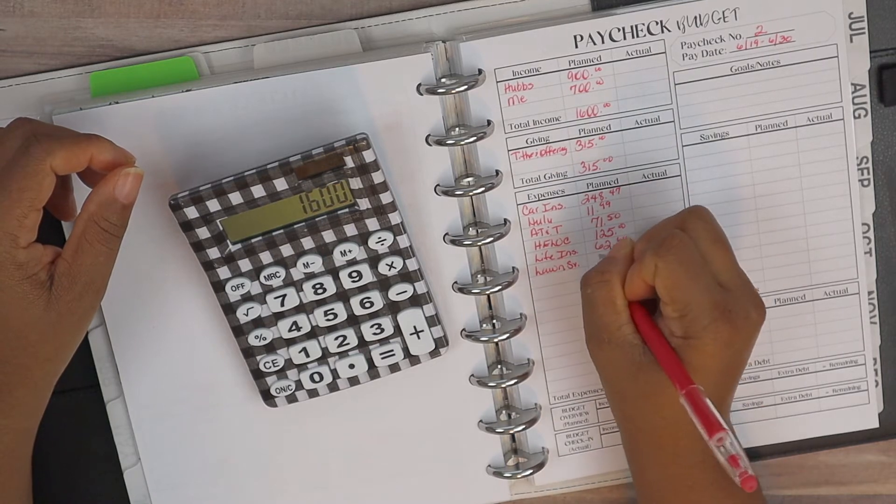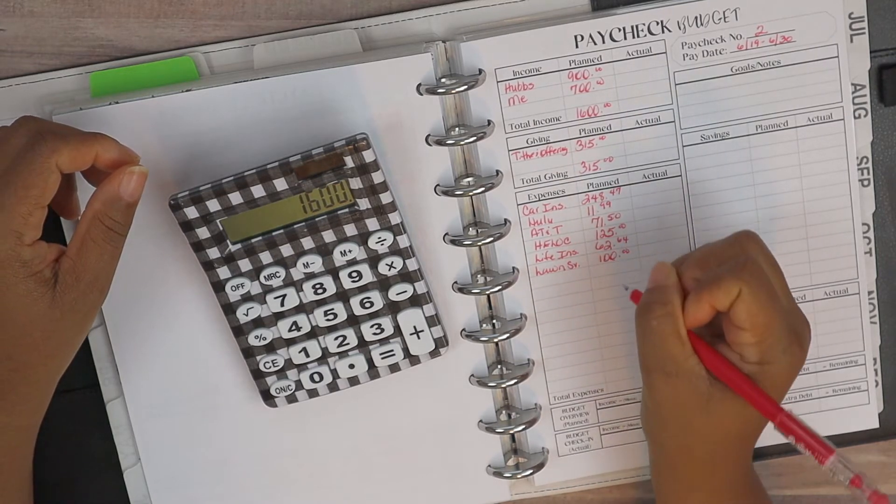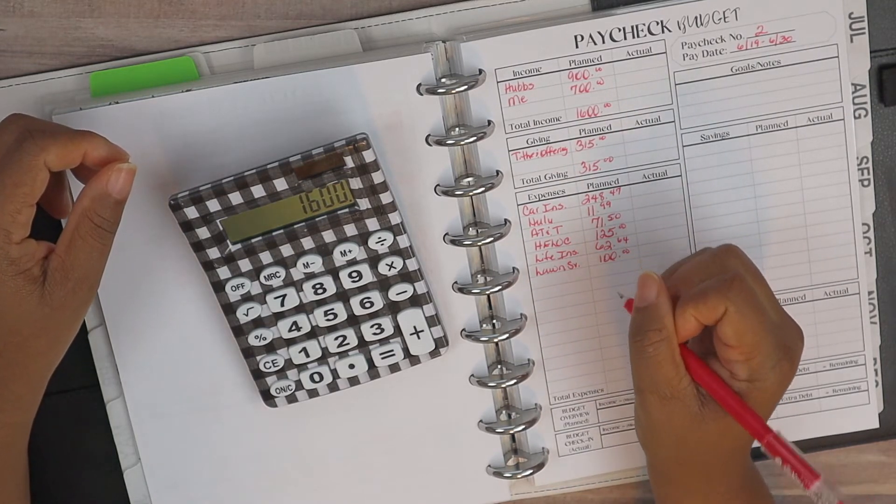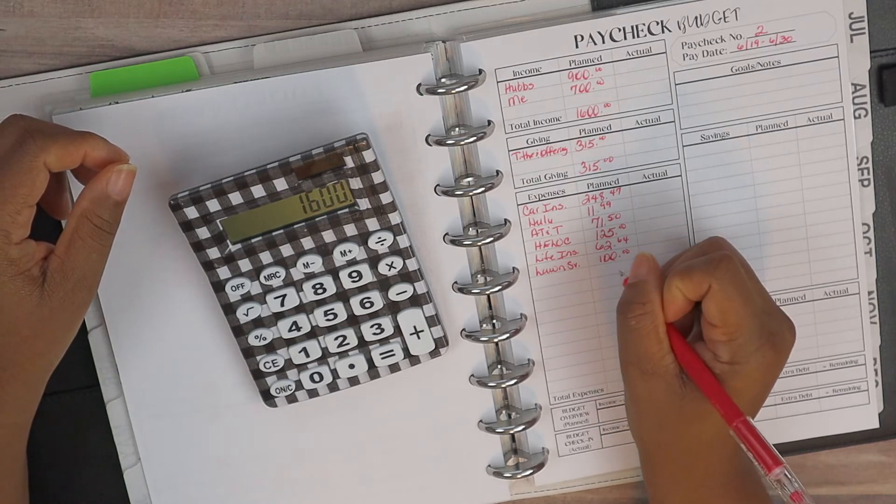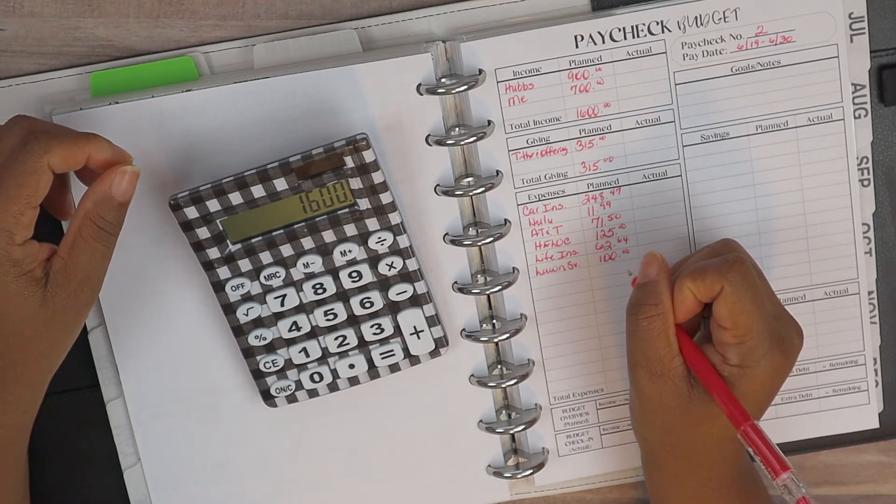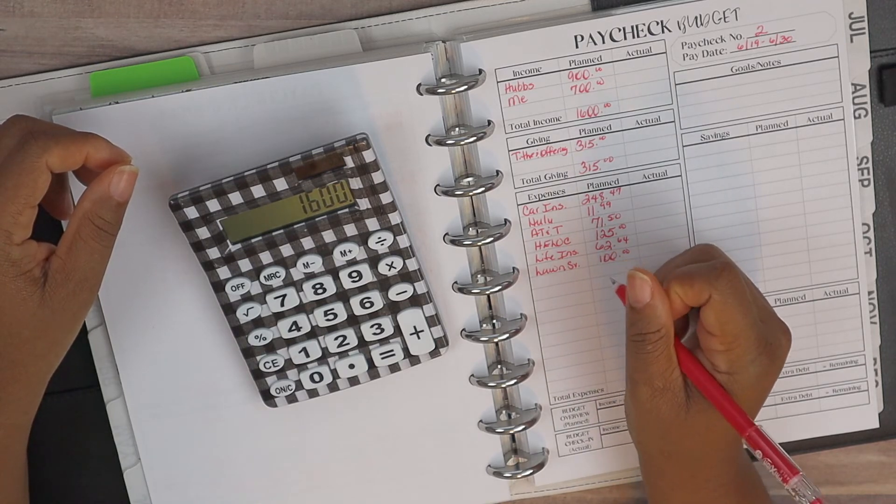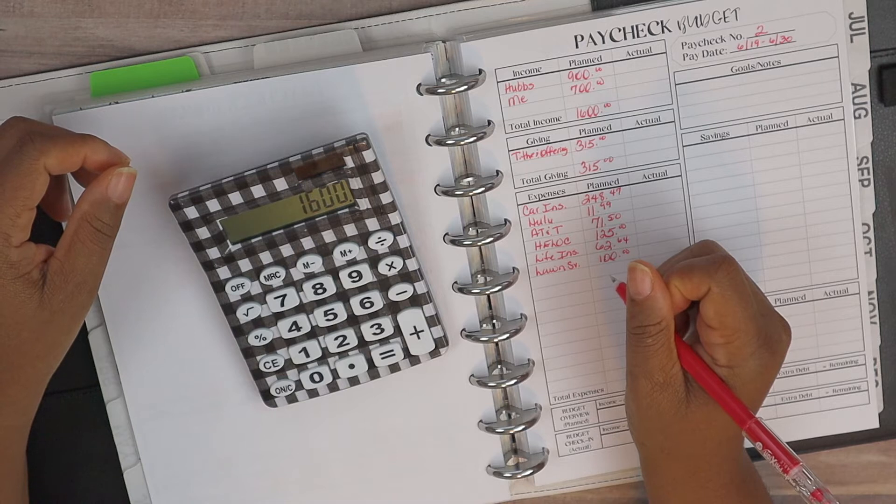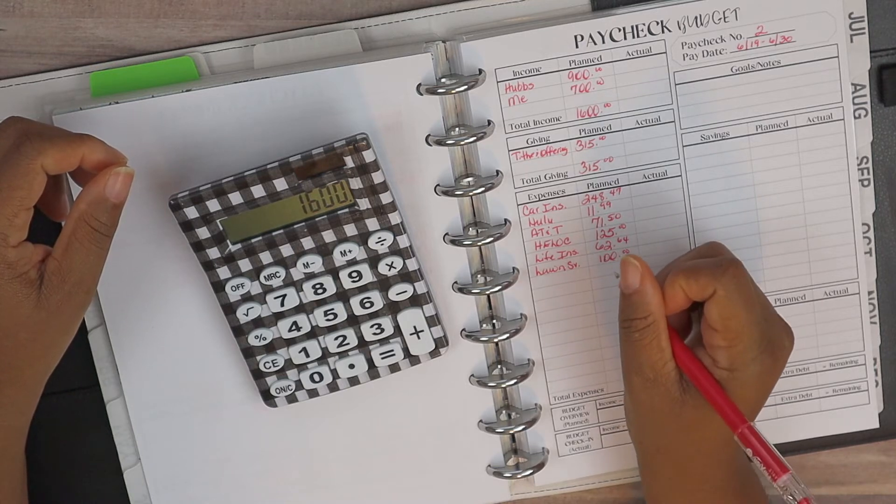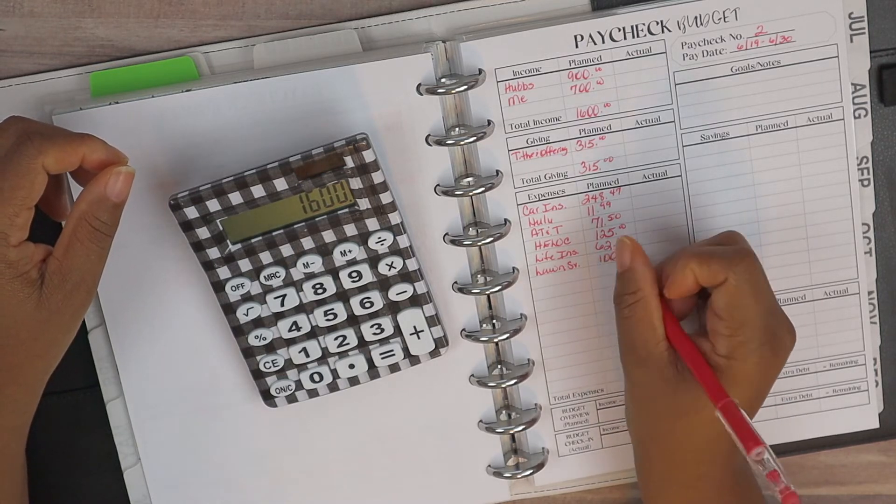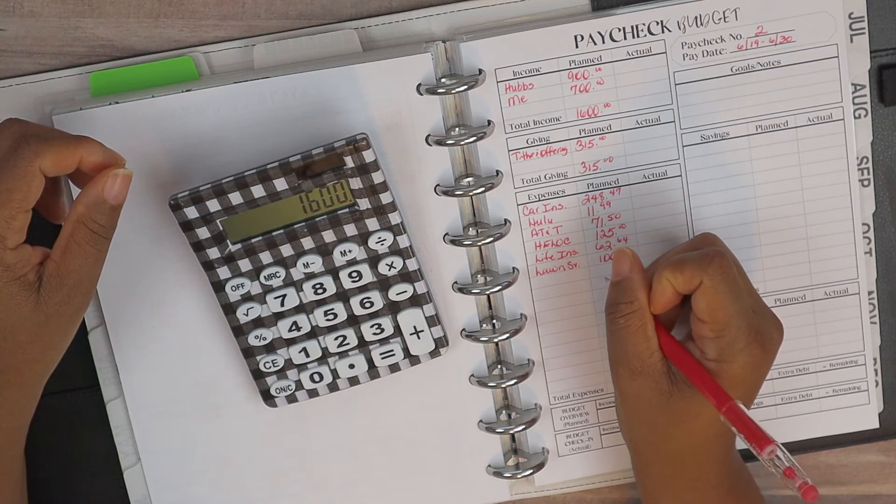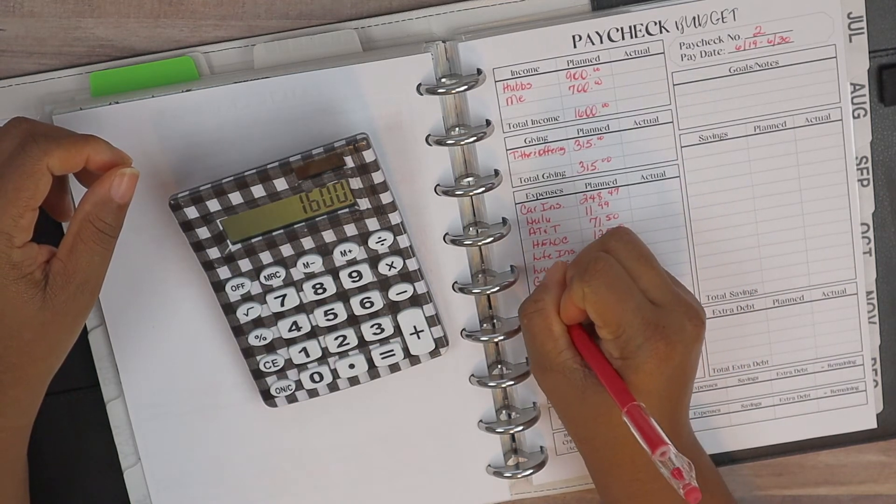Lawn service is at $100, and I did explain that when I did our budget pre-plan I planned for $150, but the lawn guy came at the end of May, so when I looked at the calendar we should only get two cuts for the month of June, so I'm only going to plan for the two cuts which is the $100.